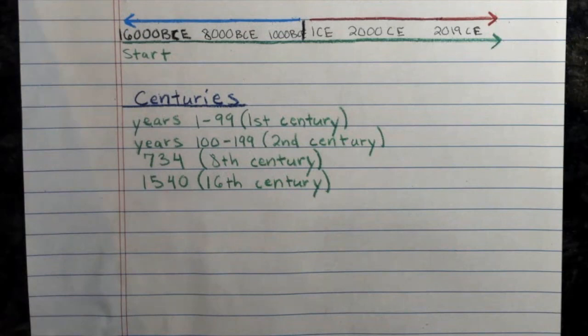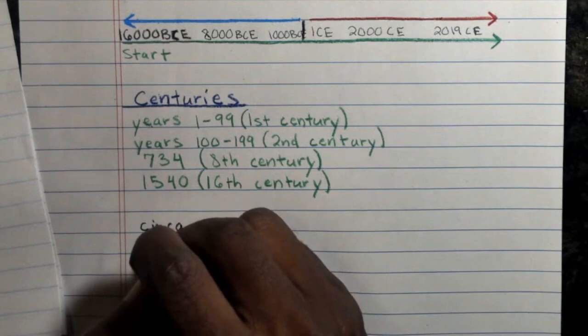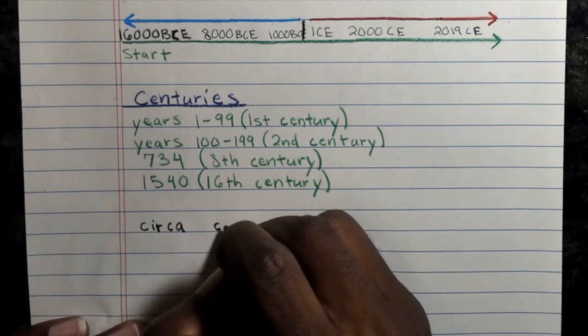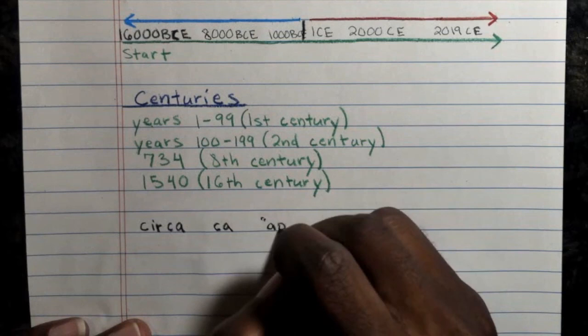The last example of a date we're going to talk about is circa, spelled C-I-R-C-A, or you may also see it abbreviated as CA. What that represents is an approximation — an approximate date, meaning around or about a given time. So, approximately.